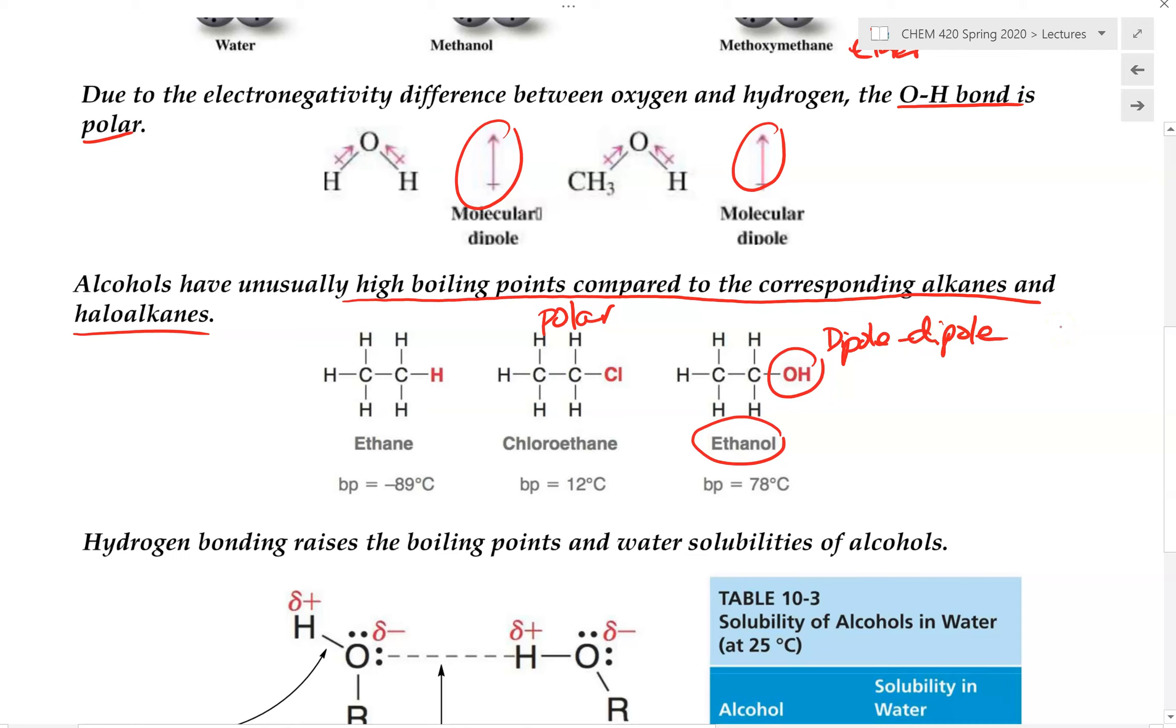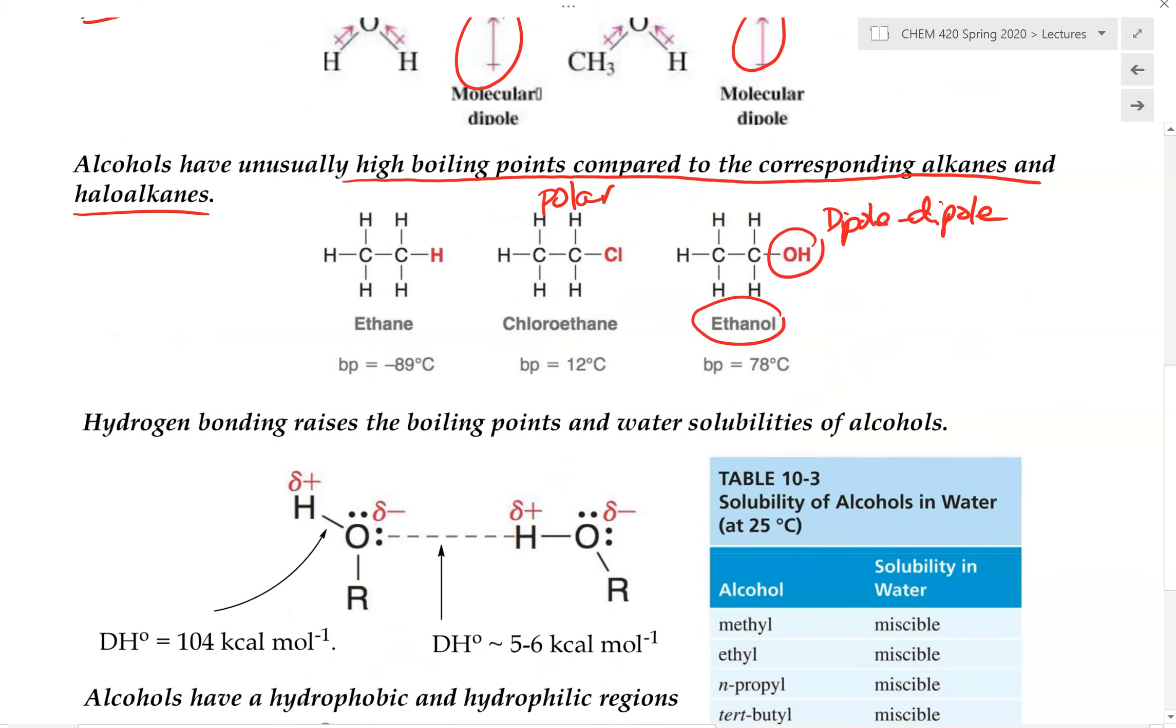But the same explanation could also go for the haloalkane as well because this is also polar. But why do the alcohols have a much higher boiling point compared to the haloalkane? The answer is due to extensive hydrogen bonding that alcohols are able to make. It is the hydrogen bonding that raises the boiling point and the solubility of alcohols in water.